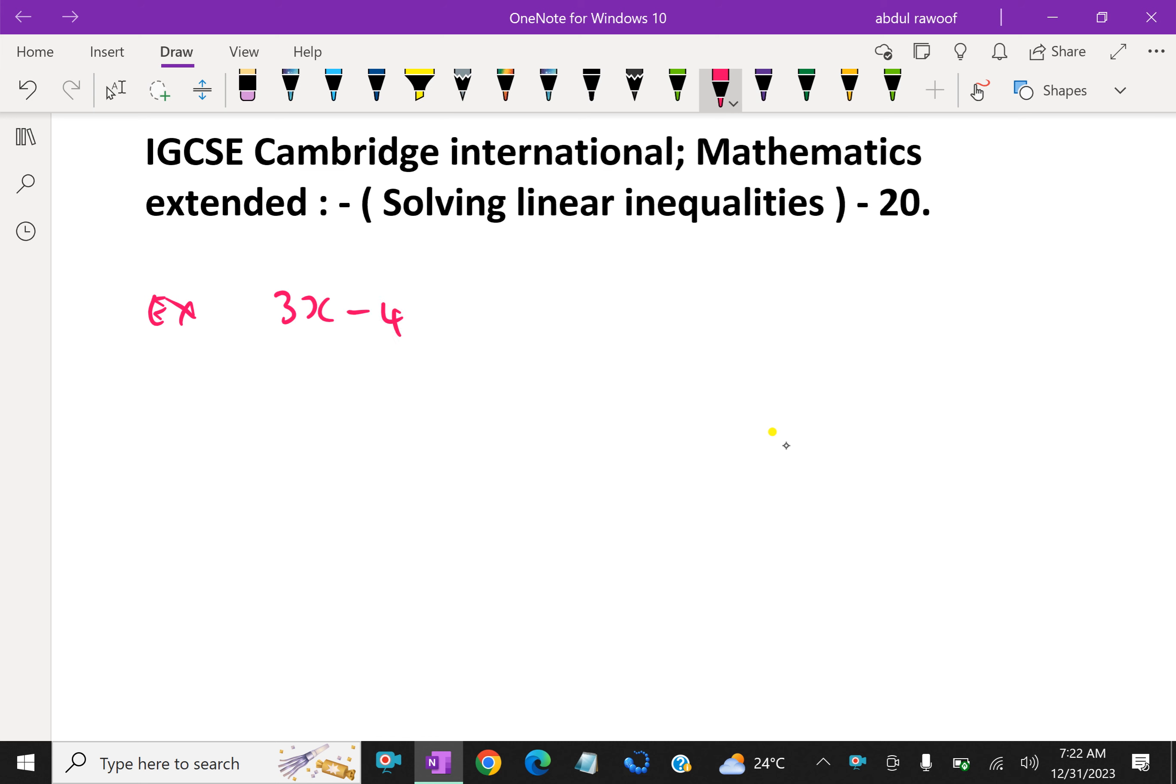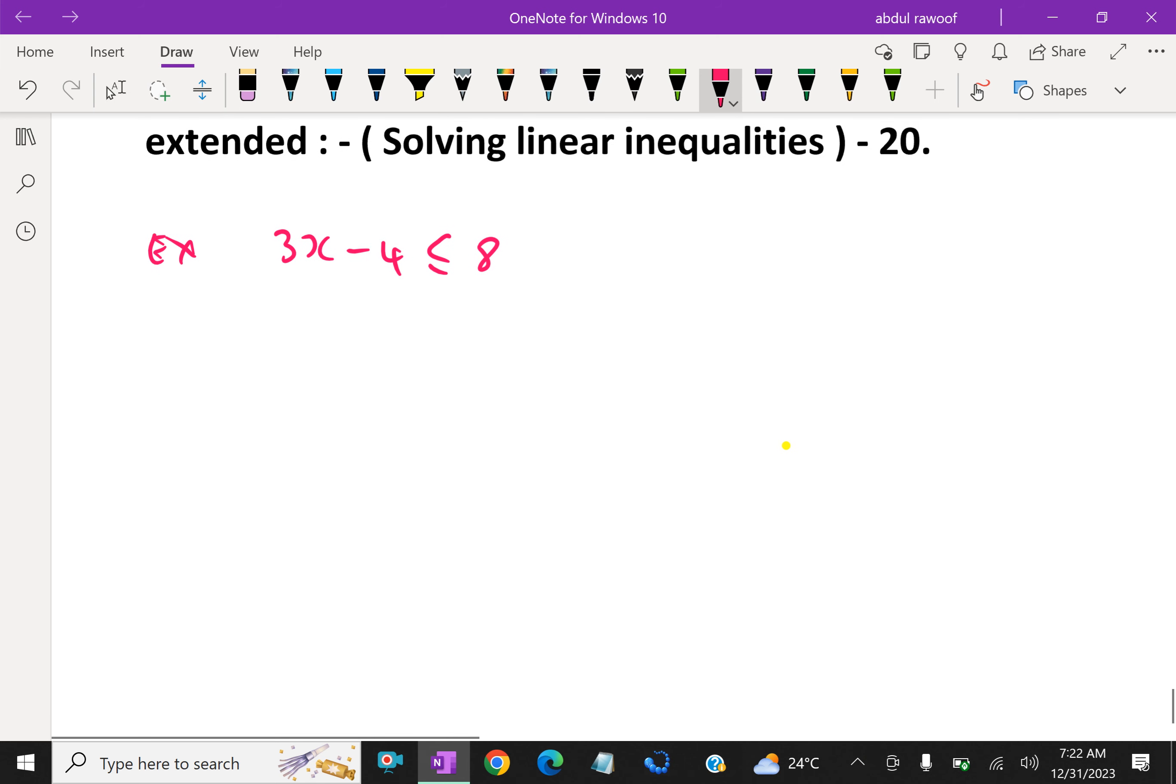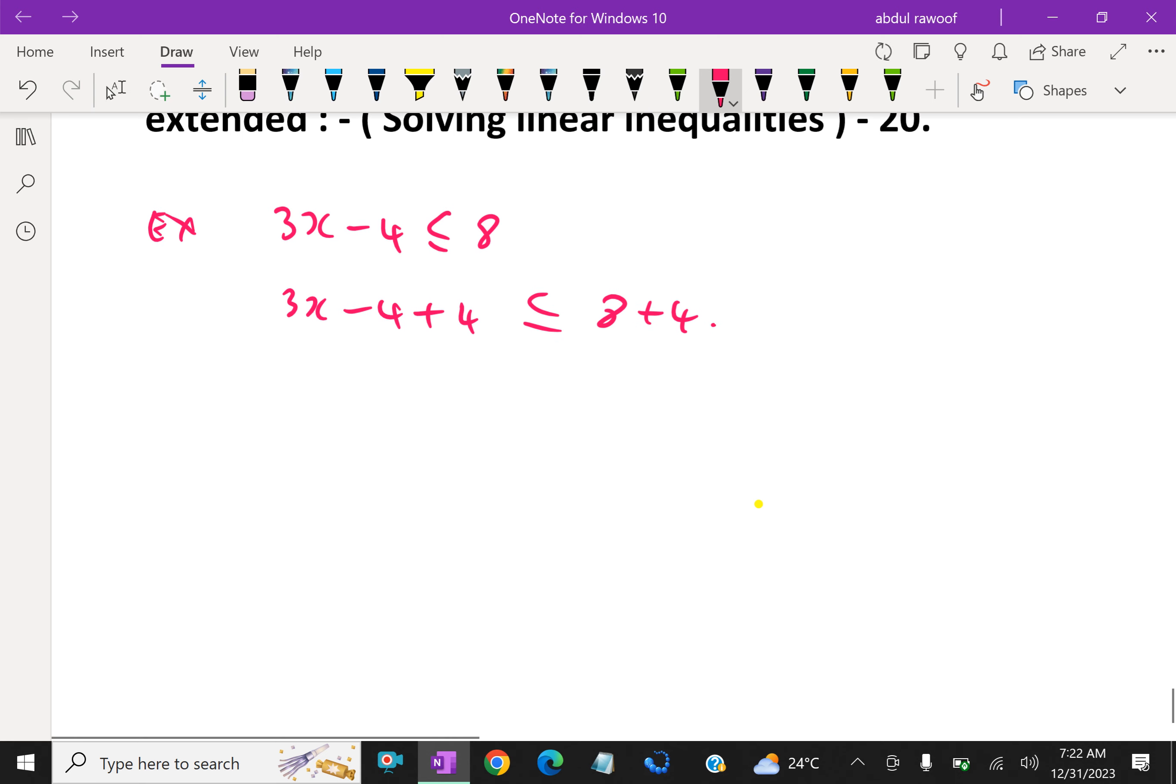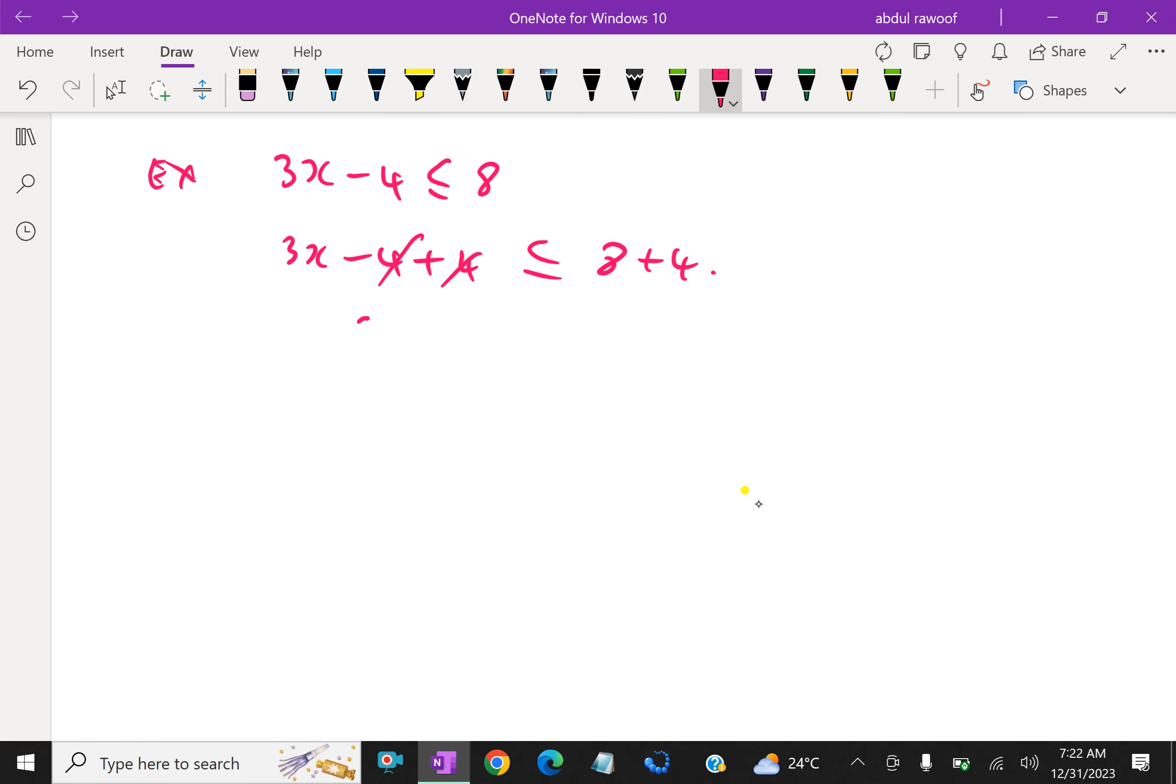3x minus 4 is less than or equal to 8. Here, how to solve this? Add 4 to both sides, that is 3x minus 4 plus 4 equals 8 plus 4. So it gives 3x less than or equal to 12.